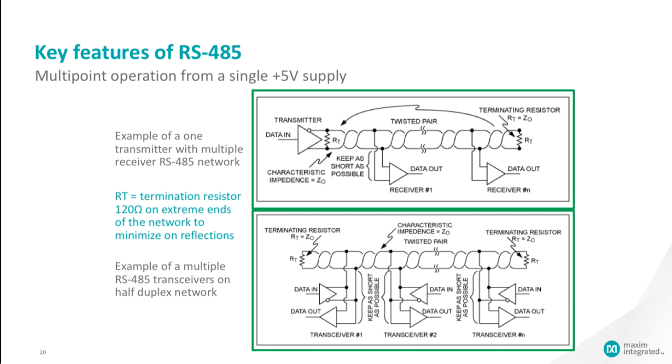The RS-485 standard enables a network or common communication bus line with multiple devices based on a single plus-5 volt supply. The top diagram shows an RS-485 network where there is one transmitter with multiple receivers. The bottom diagram depicts a network where there are multiple transceivers.